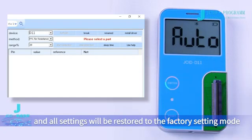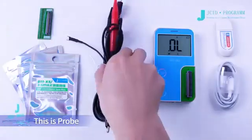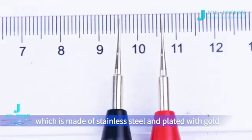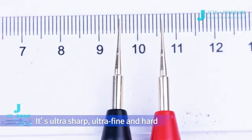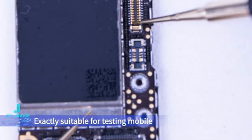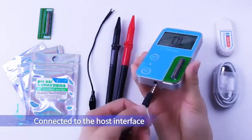This is probe, which is made of stainless steel and plated with gold. It's ultra sharp, ultra fine and hard, with a minimum diameter of 0.3mm, exactly suitable for testing mobile phone motherboard components.